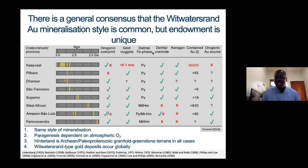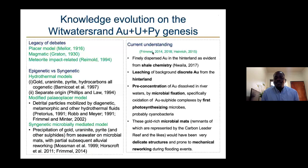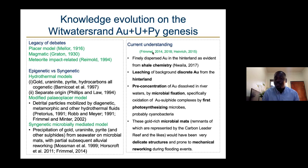To understand this, we need to start from the beginning. The debate about where Wits gold comes from — including uranium and pyrite — has evolved over time. Looking back, publications dating to 1916 by Melo proposed that the concentration of gold in the Wits Basin was in the form of placer mineralization. In the 1930s, there was a change in school of thought, with others proposing that this is a magmatic deposit and has nothing to do with placer mineralization.